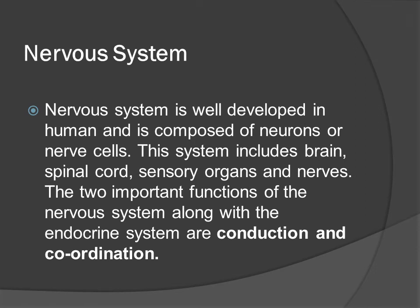The nervous system is well developed in humans and is composed of neurons or nerve cells. The system includes brain, spinal cord, sensory organs and nerves. The two important functions of the nervous system along with the endocrine system are conduction and coordination.